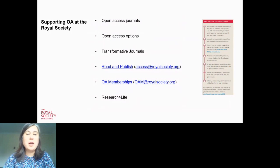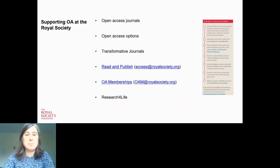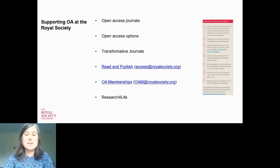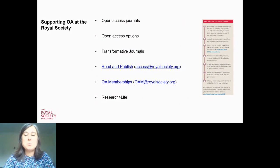We have two fully open access journals: Royal Society Open Science and Open Biology. Across all other hybrid journals there are open access options for authors. Four of our journals — Proceedings A, Proceedings B, Biology Letters, and Journal of the Royal Society Interface — are transformative journals and will move to a fully open access model once 75% of articles are published open access. We also have a number of prepaid open access options for authors.